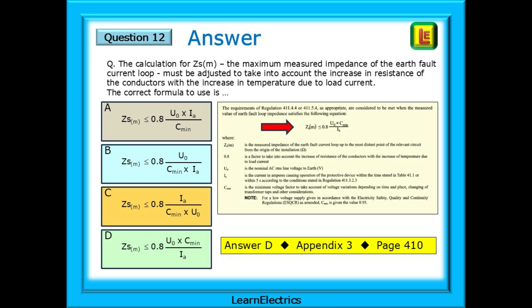The answer is formula D. This is found on page 410 of appendix 3. This is the so-called 80% rule. How did we find that in the book?